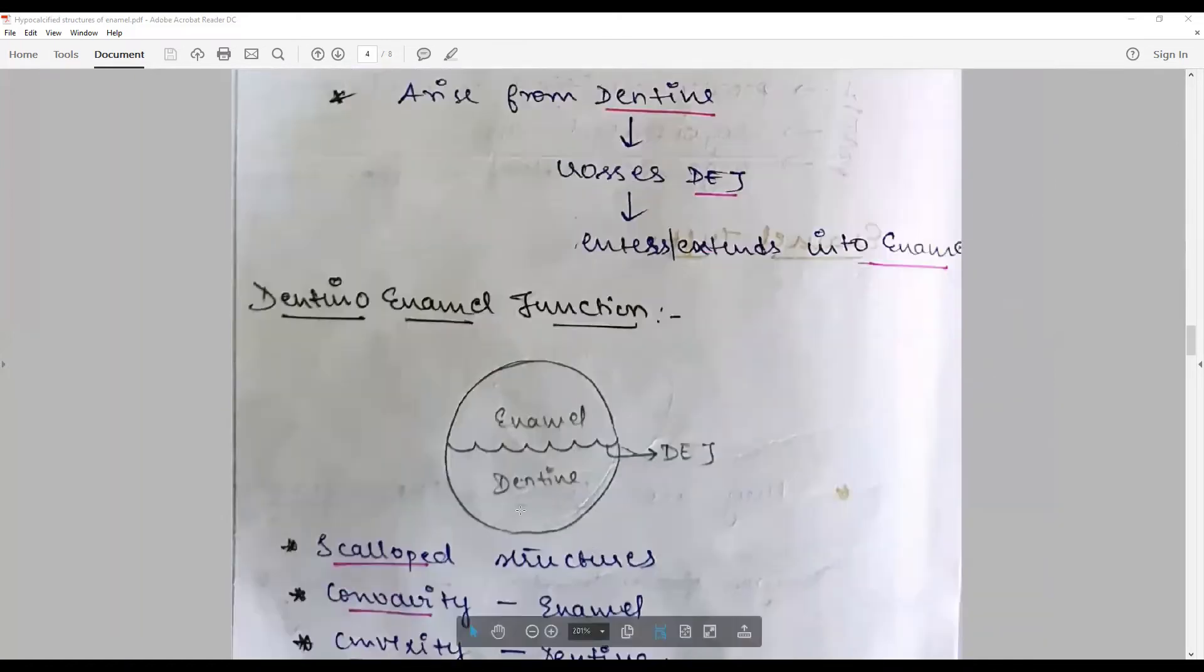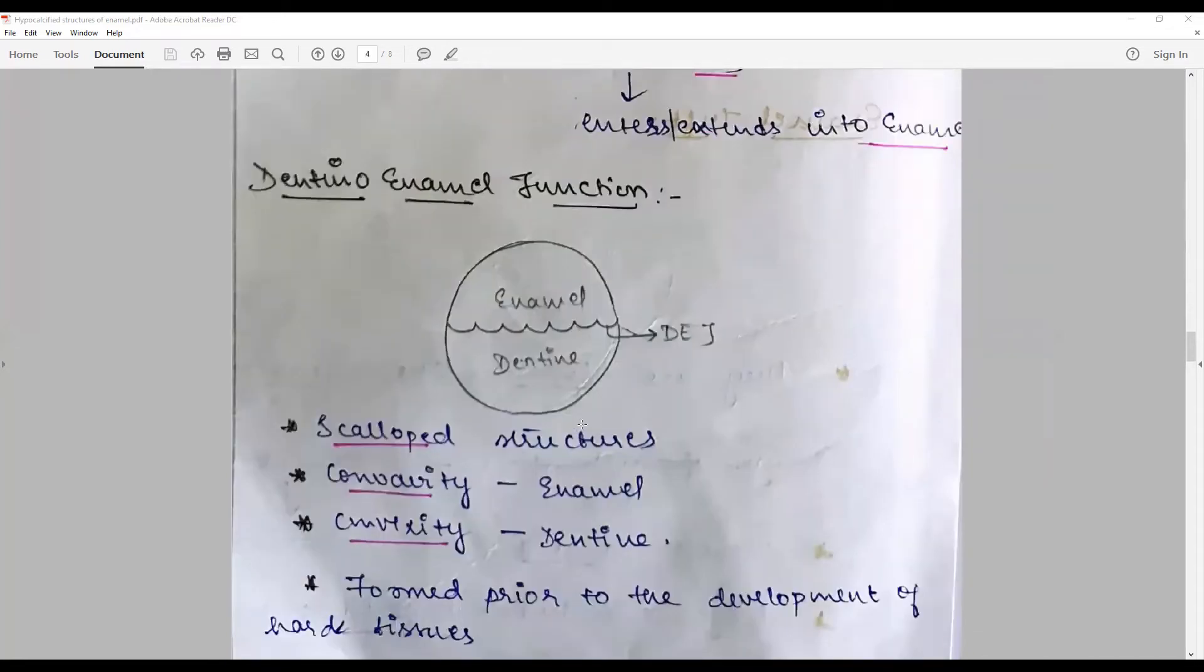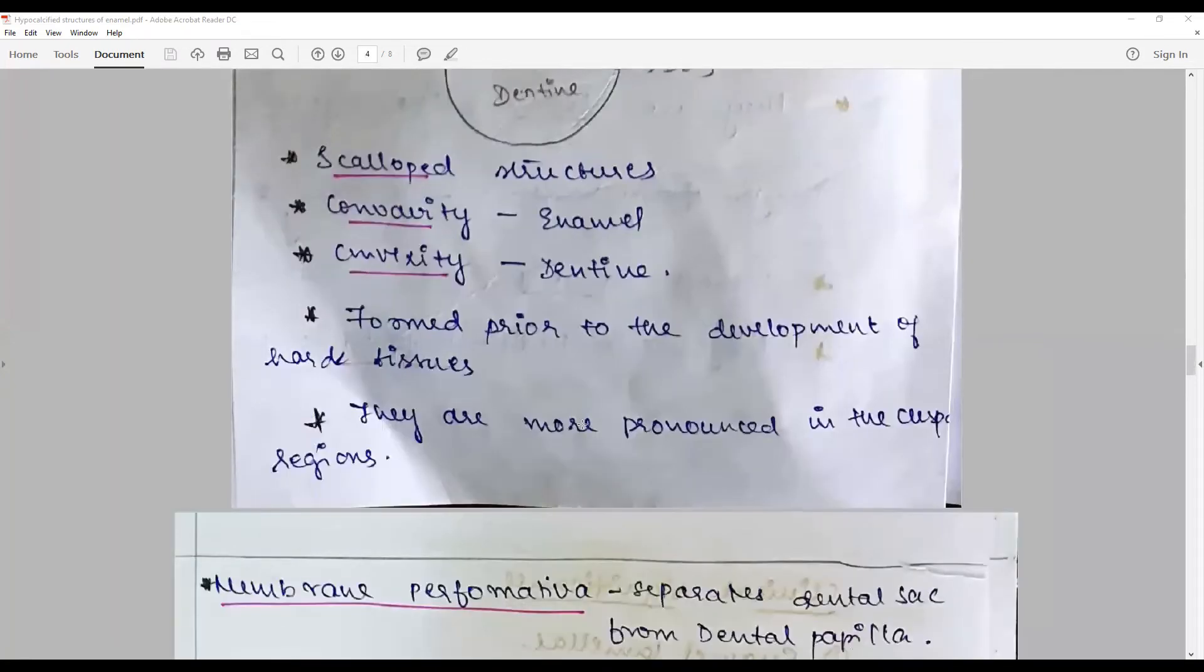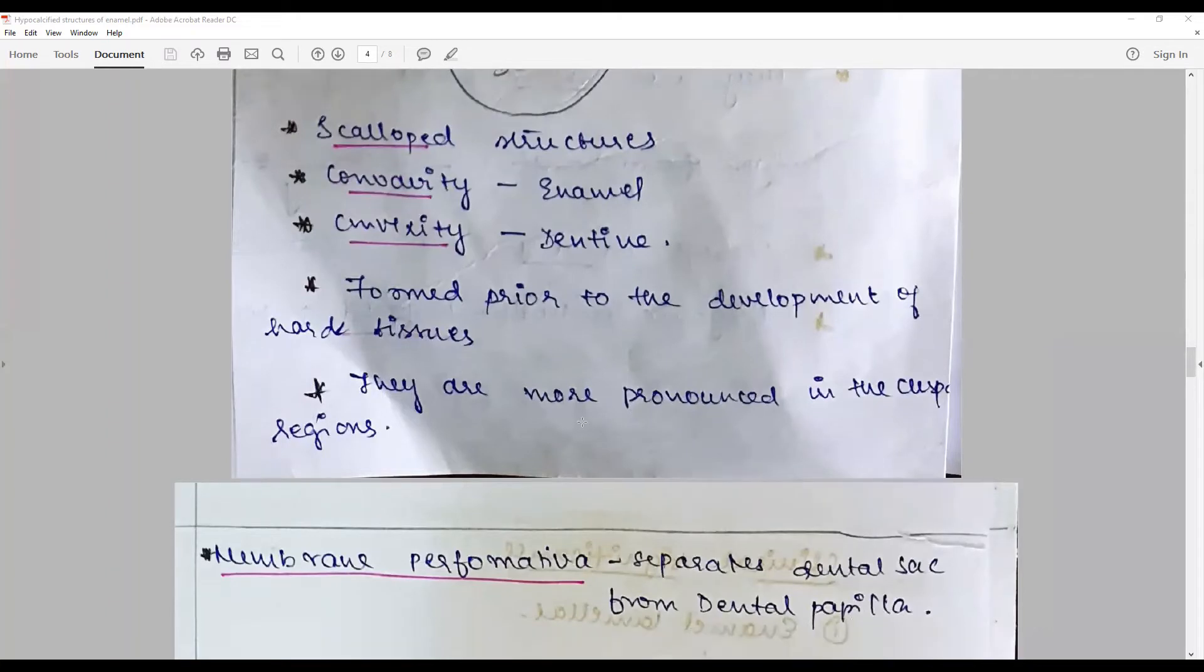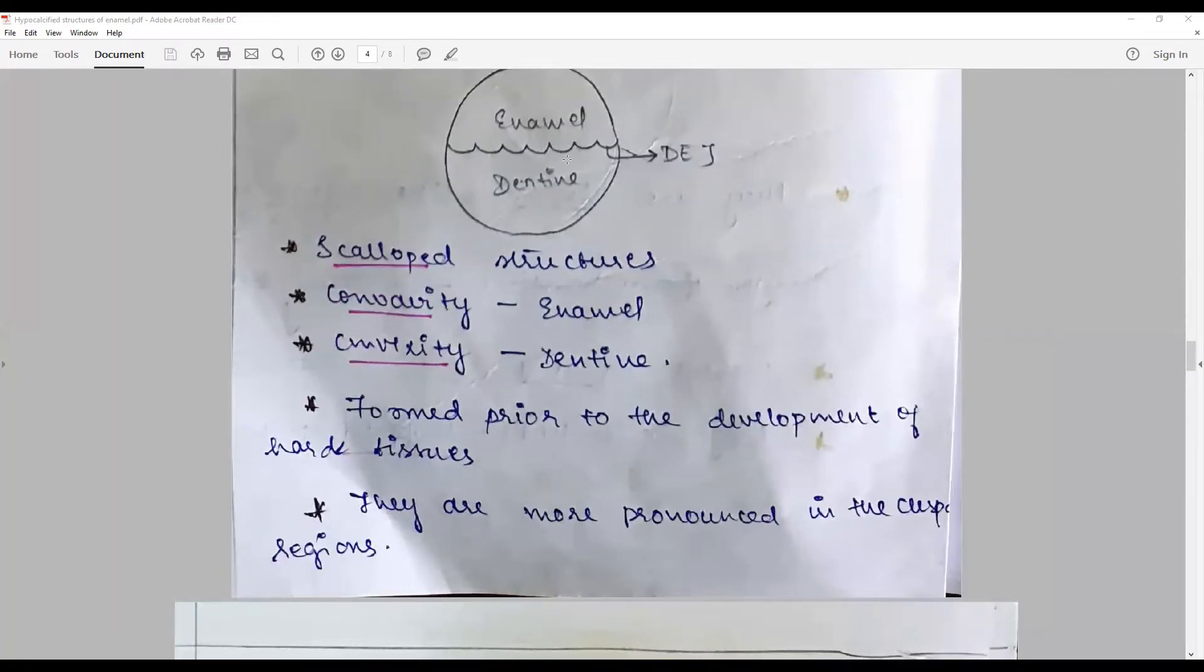The dentinoenamel junction is a scalloped structure with the concavity facing the enamel and convexity facing the dentin. They are formed prior to the development of tissues and are more pronounced in the cuspal regions. The membrane preformativa structure present in the dental sac separates the dental sac and dental papilla, and that is what develops into the dentinoenamel junction.